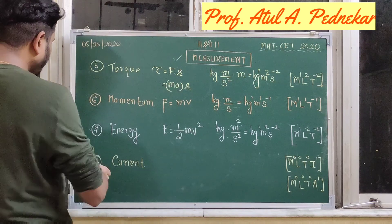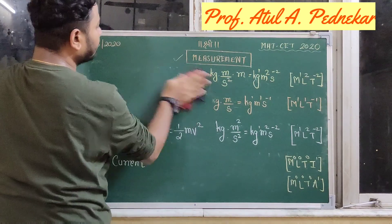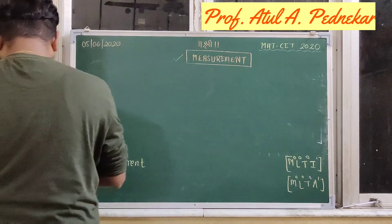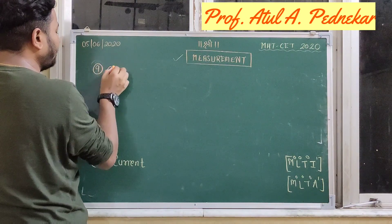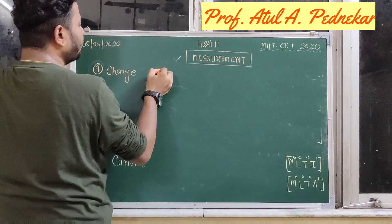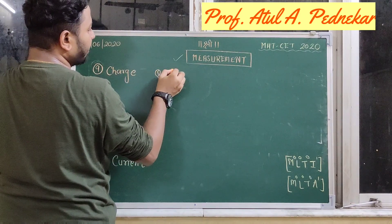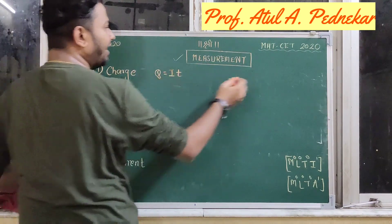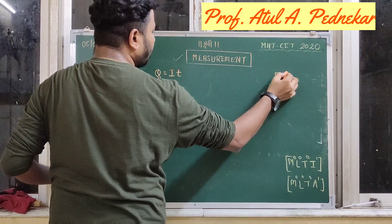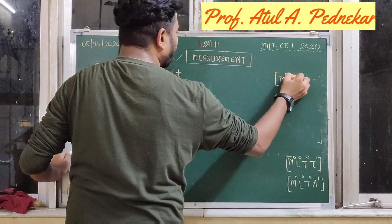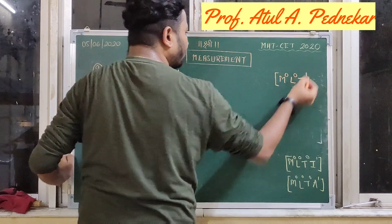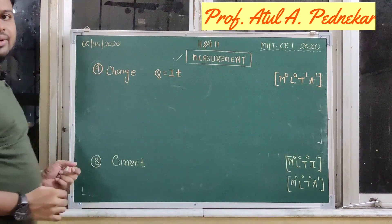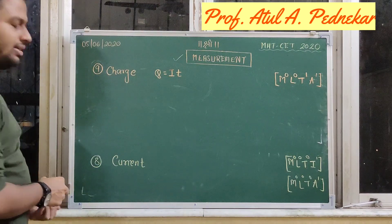Once you know the dimensions of current, you can write the dimensions of electrical charge. Charge is denoted as Q and is calculated as current multiplied by time. The charge unit is coulomb, but from the formula: there is no mass factor so M0, no length factor so L0, time is there so T to the power 1, and current means A to the power 1. This is how we find the dimensions of charge.